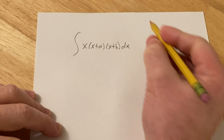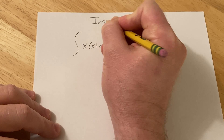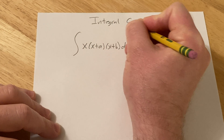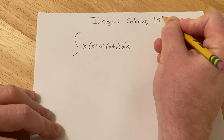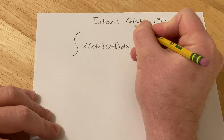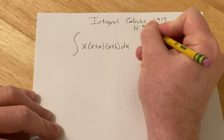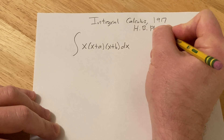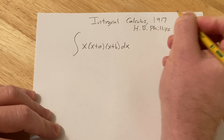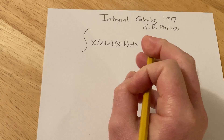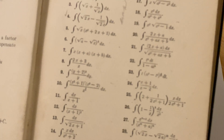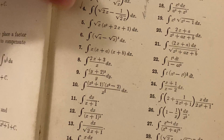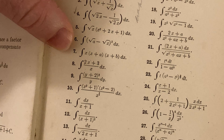This is an exercise from an old book I have. The book is called Integral Calculus, and it was published a long time ago, in 1917, and the author is H.B. Phillips. I'll actually show you the exercise in the book — it's number 7 on page 5. This is a really good book because it has solutions to all of the problems in the back as answers.